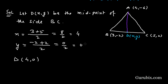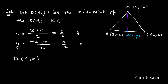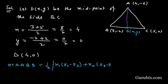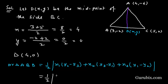Now we shall find the area of triangle ABD using the formula: Area = (1/2) |x₁(y₂ - y₃) + x₂(y₃ - y₁) + x₃(y₁ - y₂)|. We shall apply this formula to find the area of triangle ABD. The coordinates of A are (4, -6), B are (3, -2), and D are (4, 0).